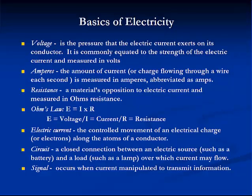The three main characteristics of a circuit are voltage, current, and resistance. Voltage is the pressure that the electrical current exerts on its conductor; it is commonly equated to the strength of the electrical current and measured in volts. Amperes is the amount of current or charge flowing through a wire each second, measured in amperes, abbreviated amps.